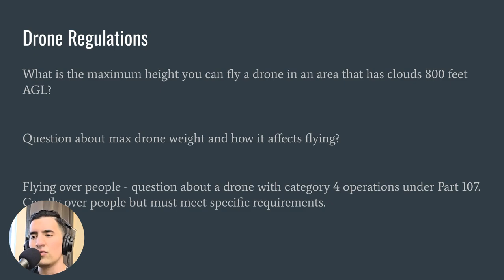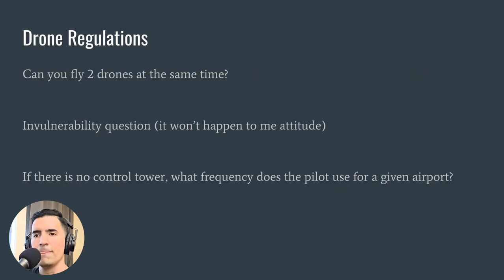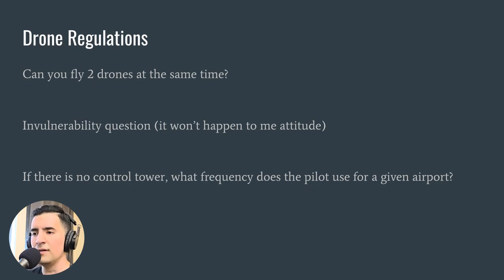There's a question about max drone weight and how it affects flying — I'm not entirely sure I got that one right. Flying over people: know your categories one through four. There was a question about category four operations. Can you fly two drones at the same time? No, you cannot. There was also a question on 'invulnerability attitude' — basically the 'it won't happen to me' mindset.